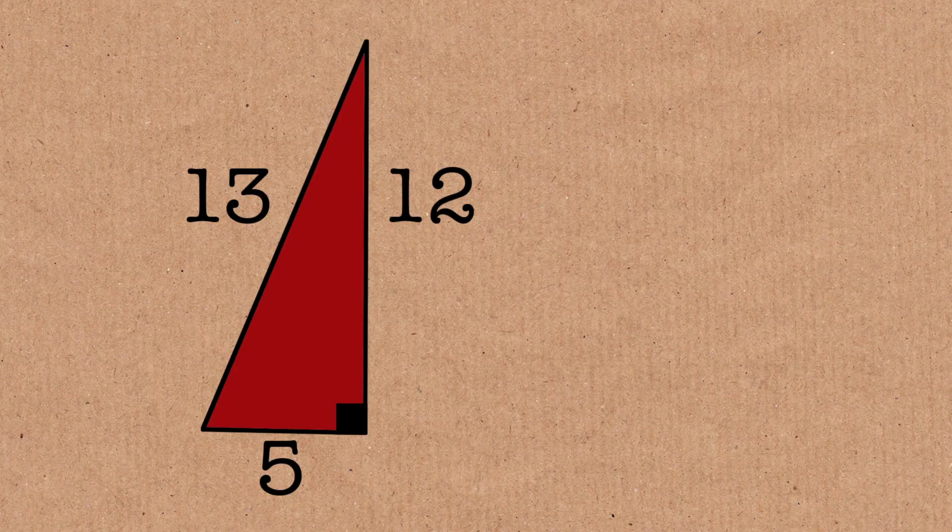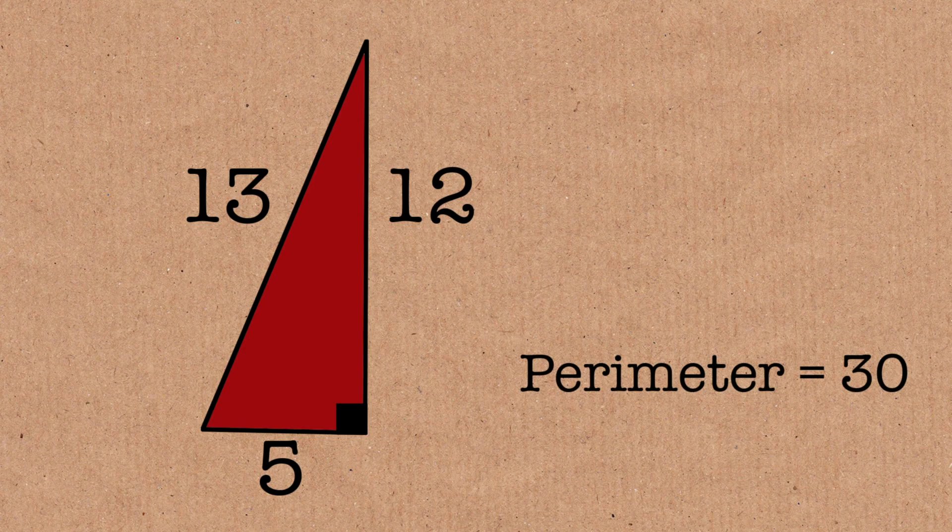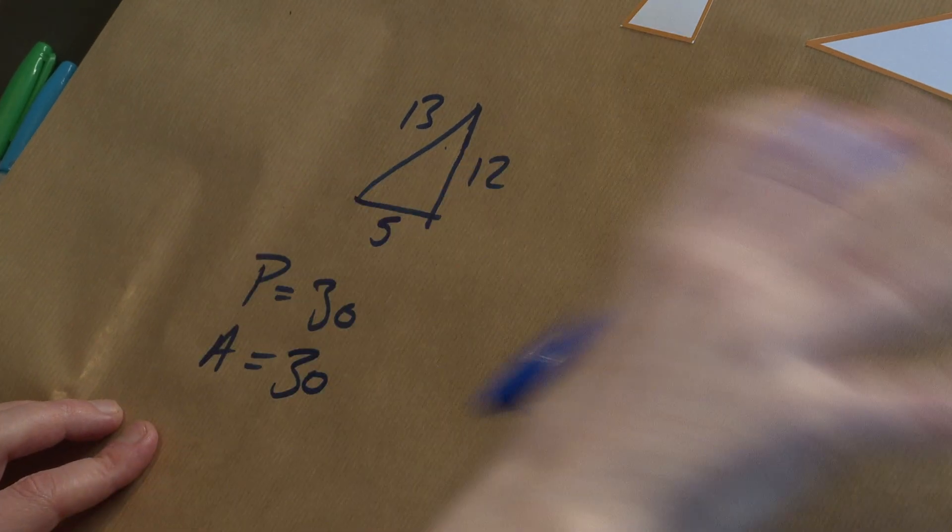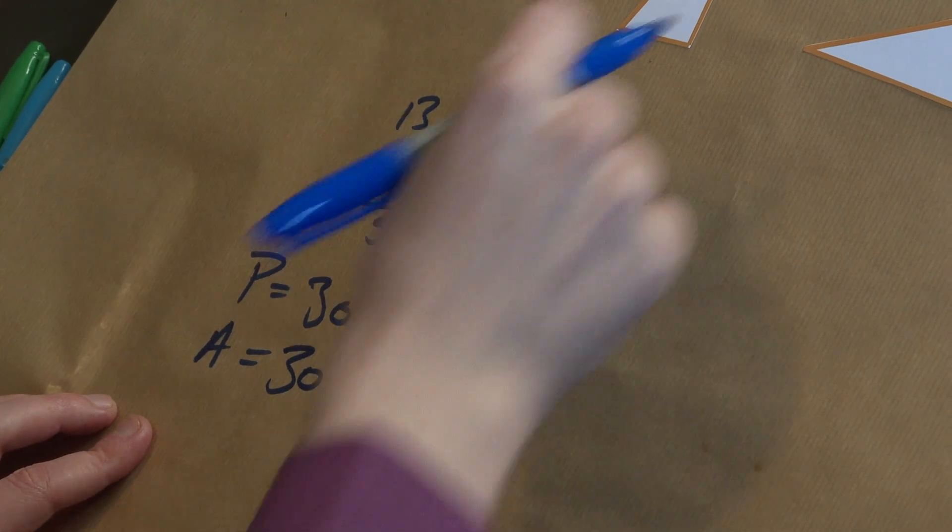So 12 plus 13 plus 5. And the area. If you work out the area, well it's half the base times the height. If you remember the formula for an area of a triangle, which will be 30 as well. So they've got the same perimeter, they've got the same area. That's what these five triangles have in common.